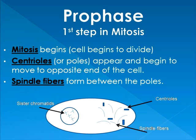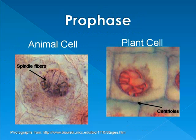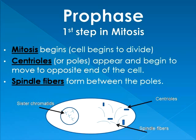Next we have prophase — this is where mitosis begins. It's step 1 in mitosis; the cell begins to divide. Centrioles — organelles responsible for cell division — move to either end of the cell, and the spindle fibers form between the poles. All you need to know for prophase: it's the first stage of mitosis, the cell begins to divide, the centrioles move to the poles, and the spindle fibers form between the poles.